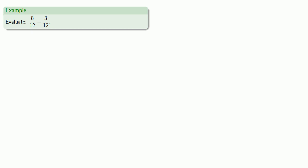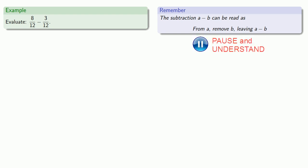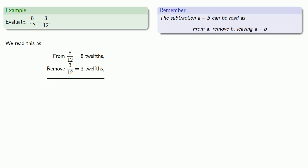To begin with, remember that the subtraction a minus b can be read as from a remove b leaving a minus b. So how you speak influences how you think, so we can read this as from eight twelfths remove three twelfths.